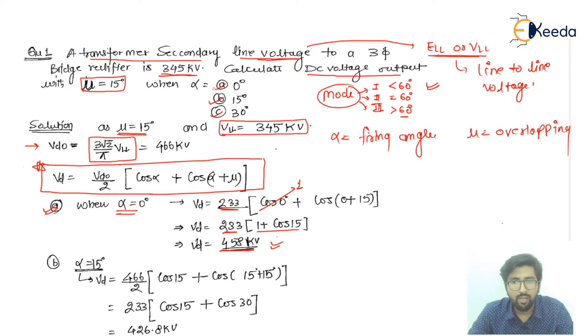And after the calculation of that, now if I talk about point number B, if the alpha is equal to 15 degrees, mu is remaining same, that is operating in mode number one. So if I use alpha equal to 15 degrees, it will be VD, same formula: VD0 by 2, cos alpha plus cos(alpha plus mu). And then after putting these values, you will get 466 by 2, cos 15 degrees, because alpha is equal to 15, and 15 plus 15 is 30. So you have to calculate cos 15, then calculate cos 30. After the calculation and multiplication with 233, you will get 426.8 kilovolts.